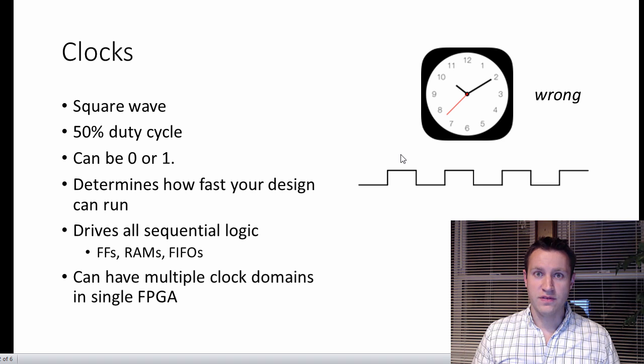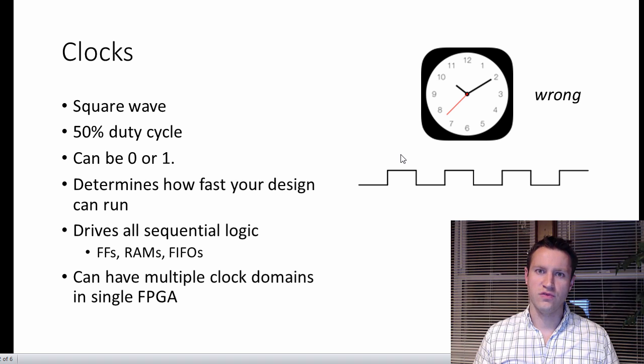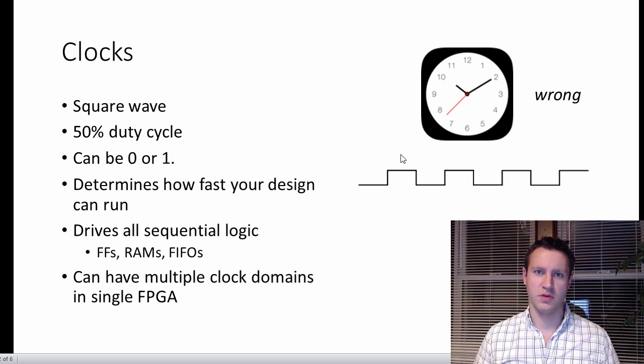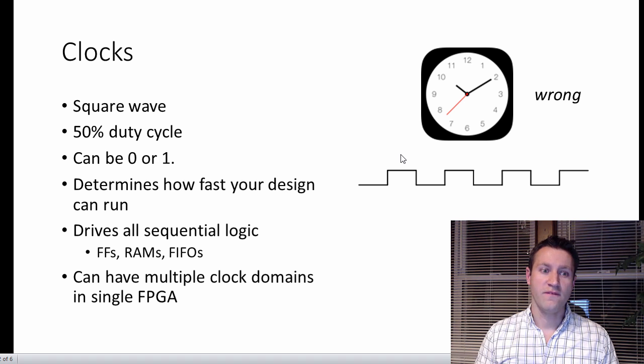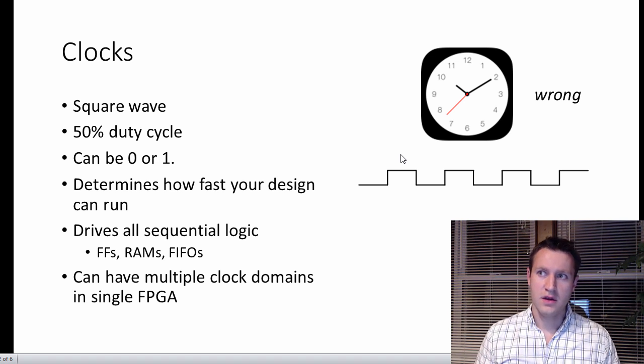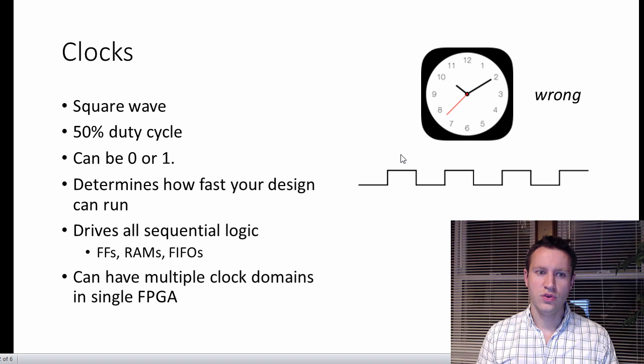You can certainly get faster than that with dedicated pieces of logic, but in the tens to 100 megahertz is usually where you are most comfortable operating in an FPGA. The faster you clock your design, the faster your main clock, the faster you can process data. Some designs might require a really fast clock, a lot of data to be processed. Other designs, you could run them at 100 hertz and it would probably be fine. It really depends on what your requirements are.